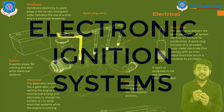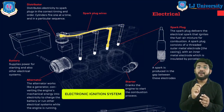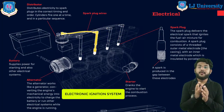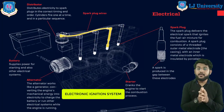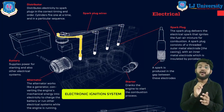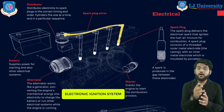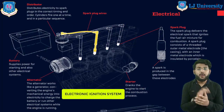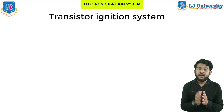An electronic ignition system is a system that does not use breaker points. Instead, there are electronic devices consisting of transistors and resistors — that is where the name 'electronic ignition system' comes from. Today we will discuss two types of electronic ignition systems that are widely deployed in many vehicles: first is the transistor ignition system, and second is the distributor-less ignition system.